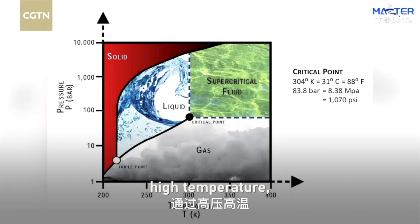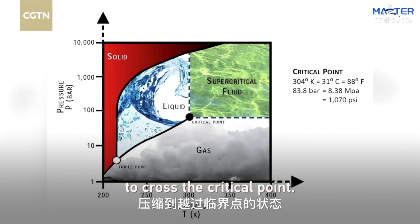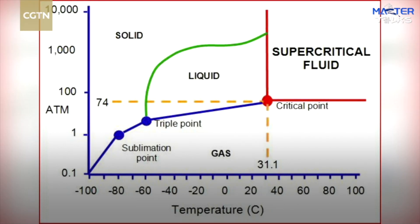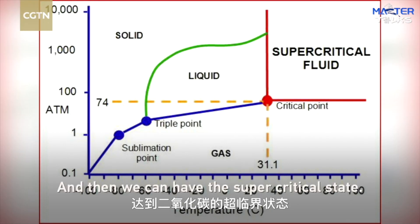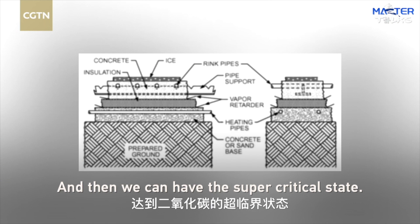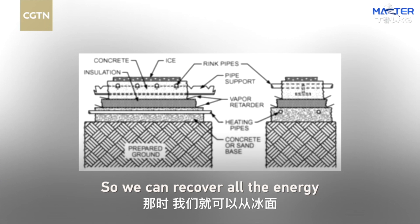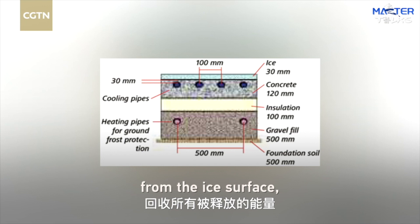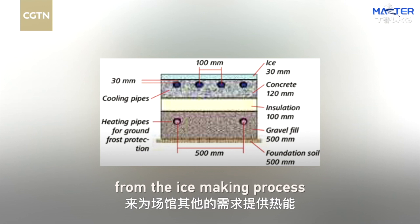The gaseous CO2 can be compressed to high pressure and high temperature, crossing the critical point. Then we can have the supercritical state, so we can recover all the energy from the ice surface and the ice making process as useful thermal energy for the venue.